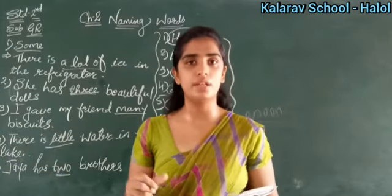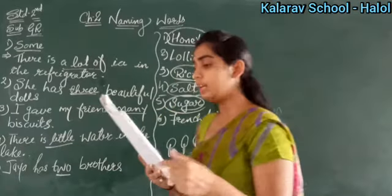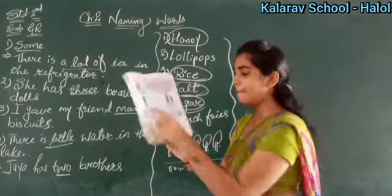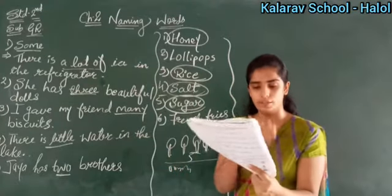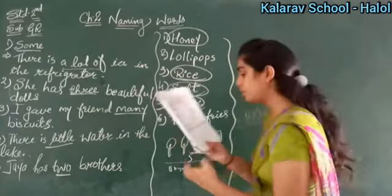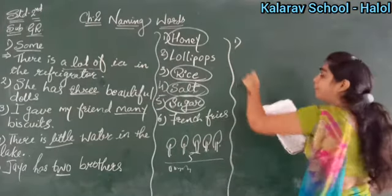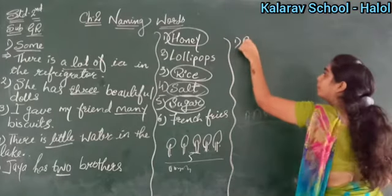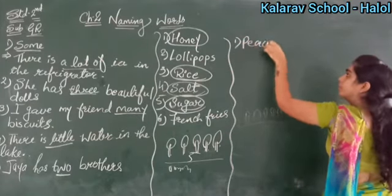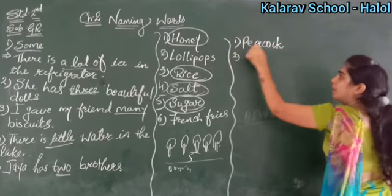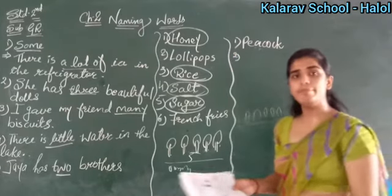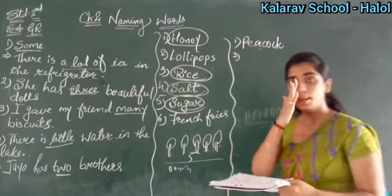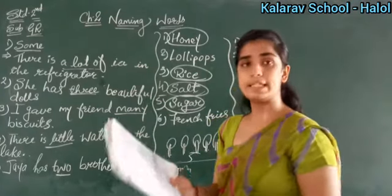Auntie is feminine because she is a girl. Here you are given a feminine word and you have to write its masculine form. For example, the first one is hen — the masculine of hen is cock. Hen is female, cock is male. So write cock. Second number is sister — the masculine of sister is brother.